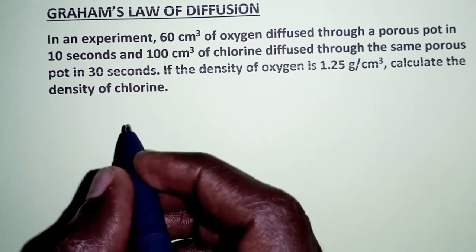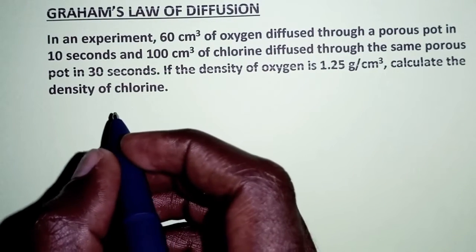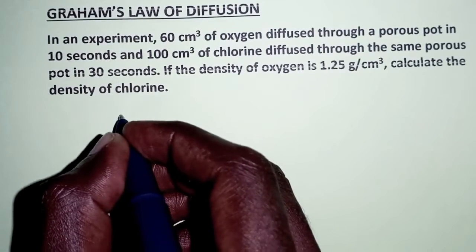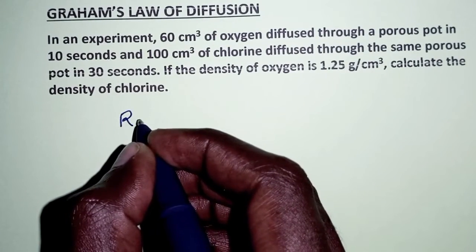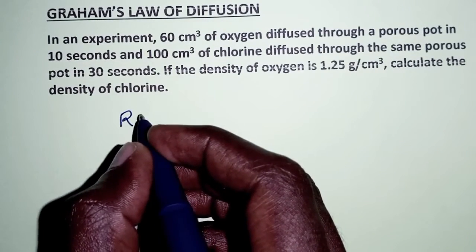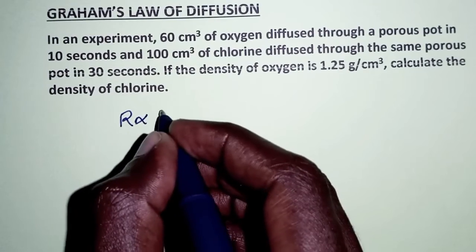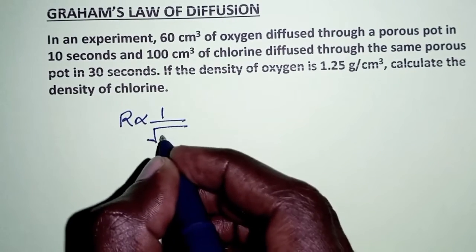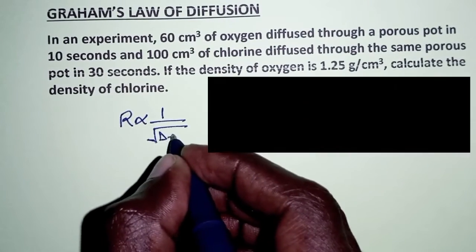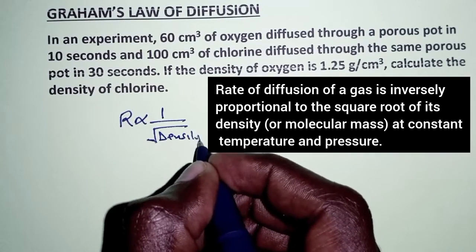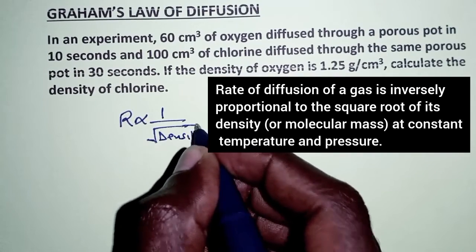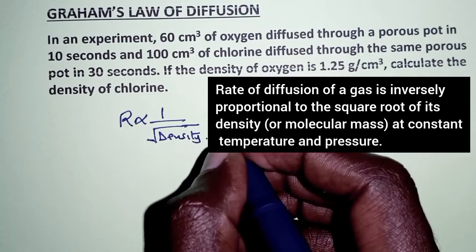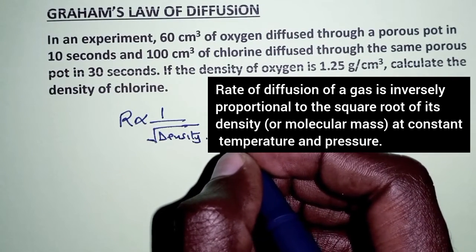Let us begin by stating Graham's law of diffusion. The rate of diffusion of a gas is inversely proportional to the square root of its density, at constant temperature and pressure.